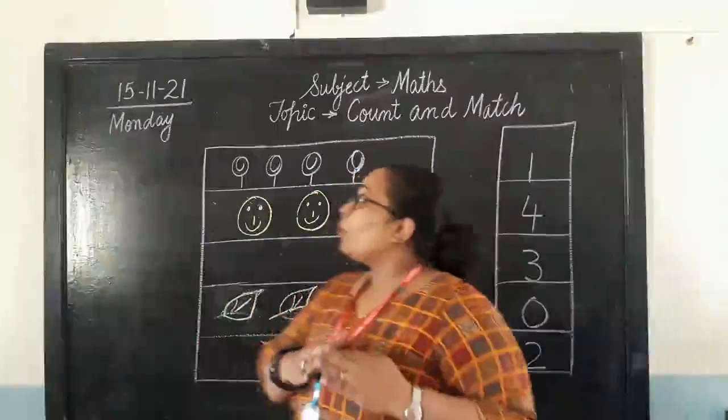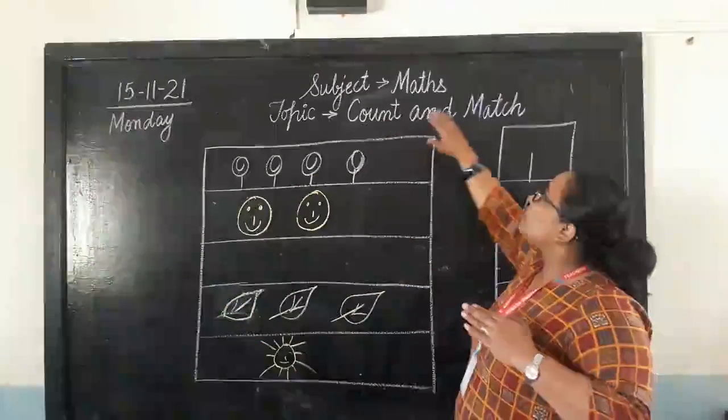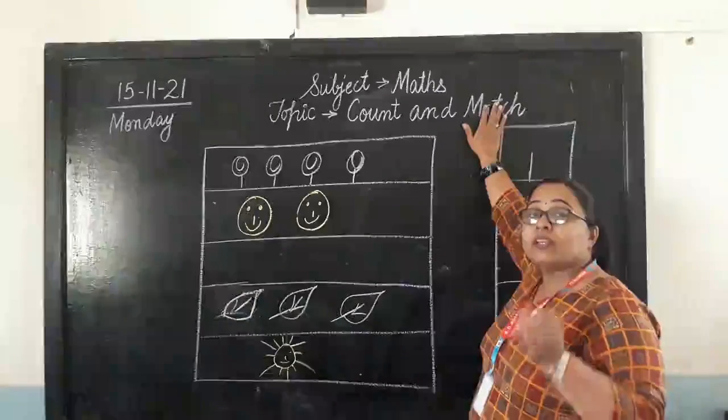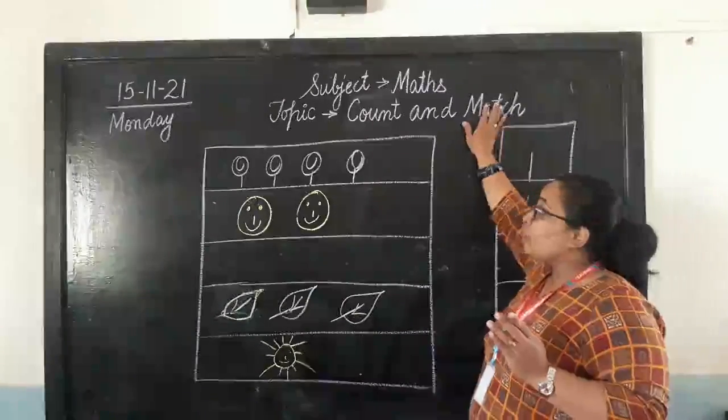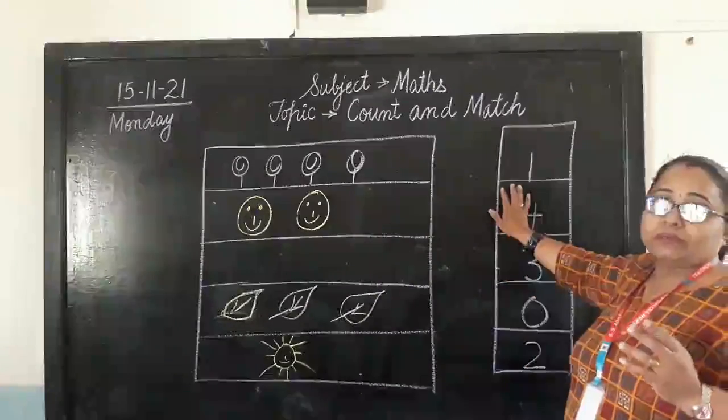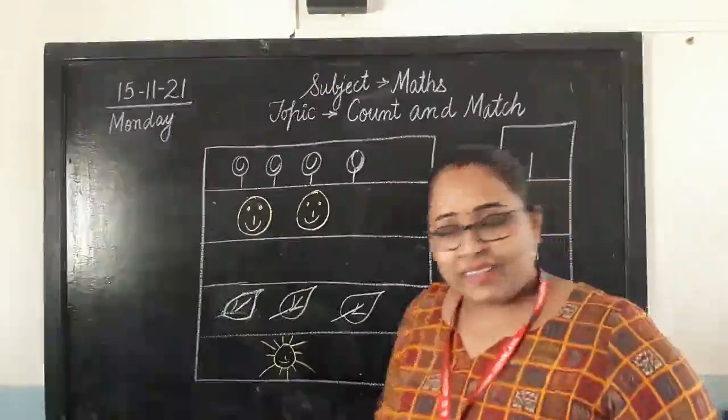So, what we call this? We call it count and match. What we call it? Count and match. First, count the object. Match it with the number. Let's begin our work then.